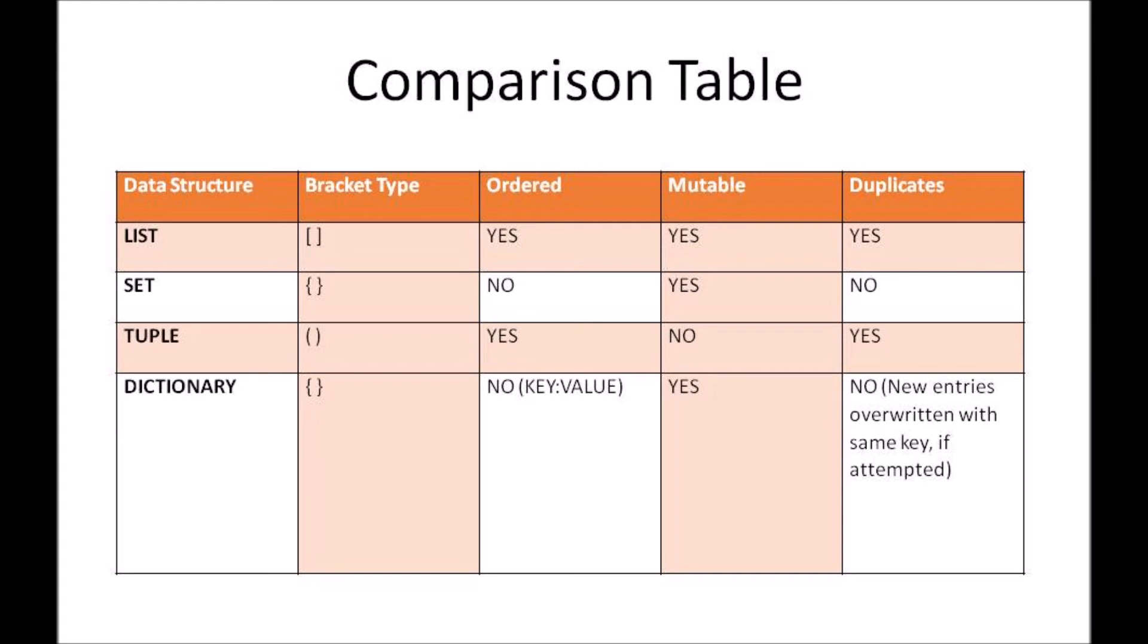Tuple is ordered, it is not mutable and it accepts duplicates. Dictionary is usually in the form of key value pair where you have your phone numbers and names stored or a word and the synonym of the word. So it could be anything in pair which is stored and yes, it is mutable and it does not accept duplicates. So if at all you wanted to try doing duplicate entry, what happens is the new entry will overwrite with the same key in case if you attempt for it.